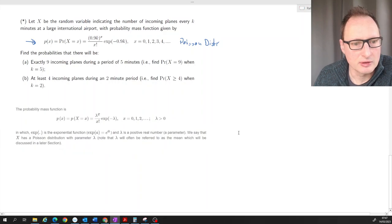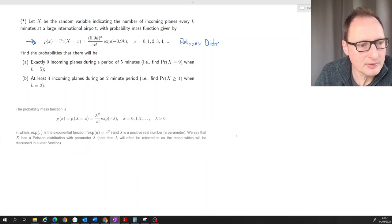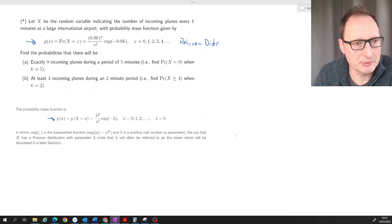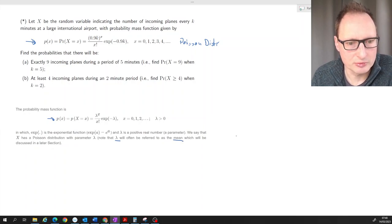So this is from our lesson here. The probability mass function of Poisson is lambda to the power of x over x factorial times exponential of negative lambda, where that lambda is the mean of the distribution, so the average value we should expect.